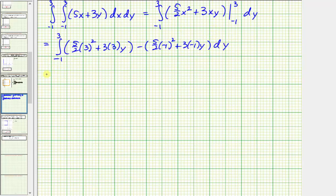Now we need to simplify. So here we're going to have five halves times nine, that's 45 halves, plus nine y, minus the quantity here, we'll have five halves, and then minus three y. Simplifying again, we have 45 halves minus five halves, that's 40 halves, or 20. Then we have nine y minus negative three y, or nine y plus three y, which is 12 y.